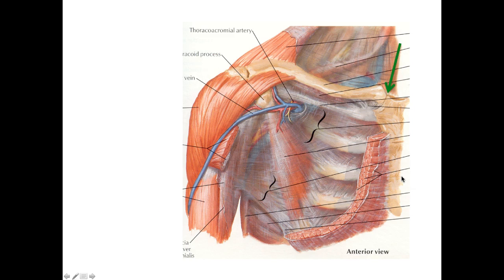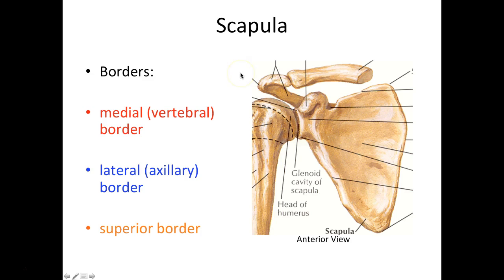The sternal end meets up to the sternum, and the acromial end is named so because it is meeting the acromion — the acromion of the scapula — which sits right behind this arrowhead here.